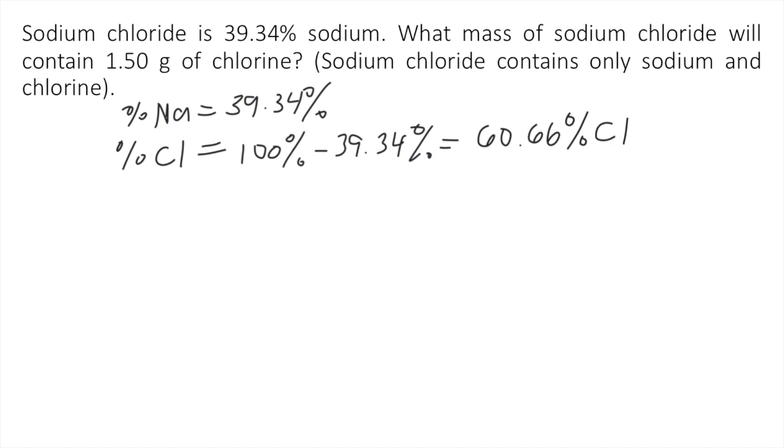Okay, now if you can recall the formula to get the mass percent of an element, let's say E, that is just equal to the mass of the element divided by the mass of the compound. So let's just put C times 100.